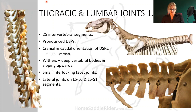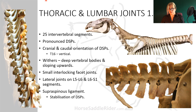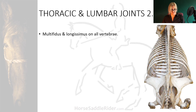A substantial ligament, the supraspinous ligament, together with the facet joints, binds the dorsal spinous processes together. The spinal stabiliser muscles — multifidus and the substantial longissimus muscles — are present on all thoracic and lumbar vertebrae.